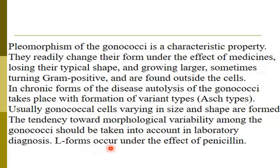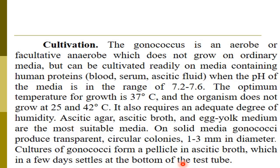Regarding the cultural characteristics of Neisseria gonorrhoeae, the gonococcus is aerobic or facultative anaerobic, does not grow on ordinary media, but can be cultivated on media containing human proteins, blood, serum, or ascitic fluid. When pH is in the range of 7.2 to 7.6, the optimum temperature for growth is 37.6 degrees — the human temperature — and the organism does not grow at 25 or 42 degrees. It also requires adequate humidity. Ascitic agar and egg yolk media are the most suitable.